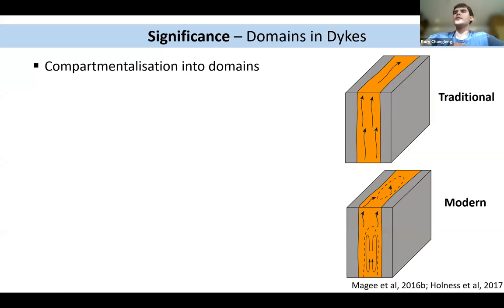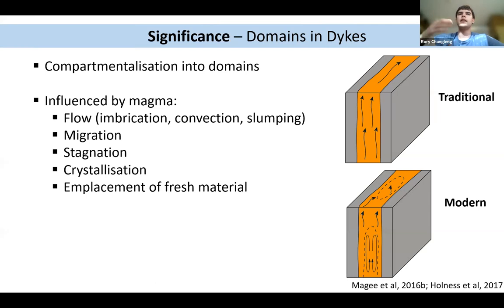First of all, the traditional view of dikes being this simplistic conduit from magma flow has been challenged increasingly in modern literature and it's now widely understood that dikes are more complex and compartmentalized in domains. These domains may be influenced by different processes like magma flow which can be convection or advection and magma migration or stagnation.